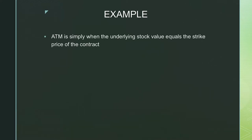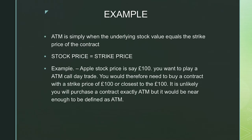I like to use them specifically for one type of scenario, which I'll confirm in the next couple of slides. At the money is simply when the underlying stock value equals the strike price of the contract. It's an easier scenario to understand compared to in the money and out the money — the stock price simply equals the strike price. An example would be if Apple's stock price is £100 and you want to buy an at the money call contract for a day trade, you would need to buy a contract with a strike price of £100 or closest to it. It's unlikely you'll purchase a contract exactly at the money, as the price is usually between two sets of strike prices, but you'll be able to purchase one near enough to the underlying stock price.